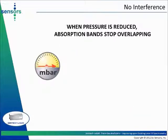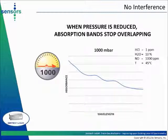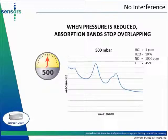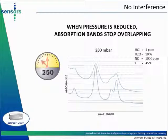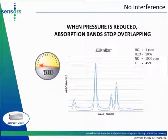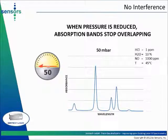When gas pressure is lowered inside the gas cell, the bandwidth of the absorption bands is reduced. As an illustration, this slide shows the spectrum of a mixture of 1 ppm of hydrochloric acid (HCl), 1,000 parts per million of nitric oxide (NO), and 10% volume of water vapor measured at 35 degrees C. At atmospheric pressure (1,000 millibar), absorption bands overlap. When lowering the pressure to 500 millibars, absorption bands begin to resolve. As pressure is further reduced to 50 millibars — one twentieth of atmospheric pressure — absorption bands are clearly resolved from each other with no spectral overlapping.